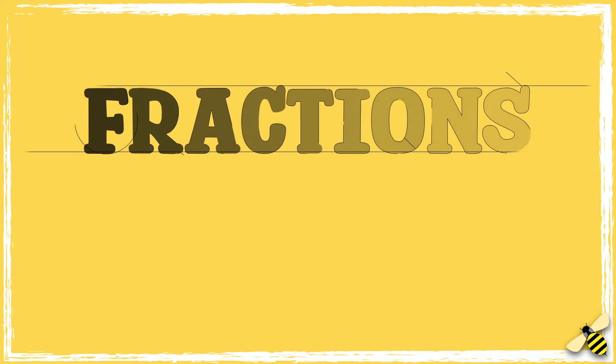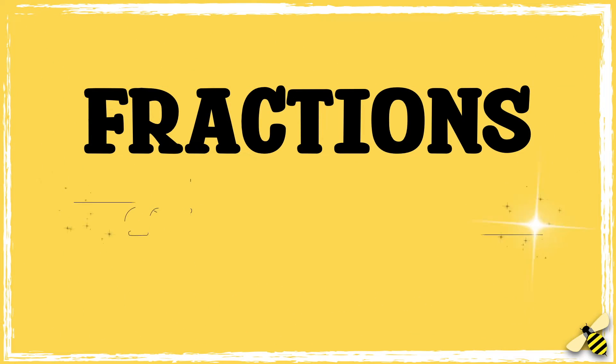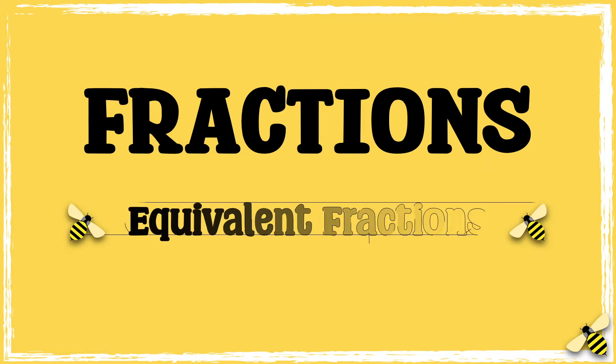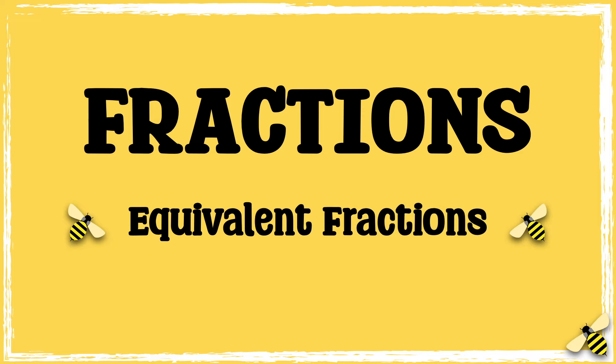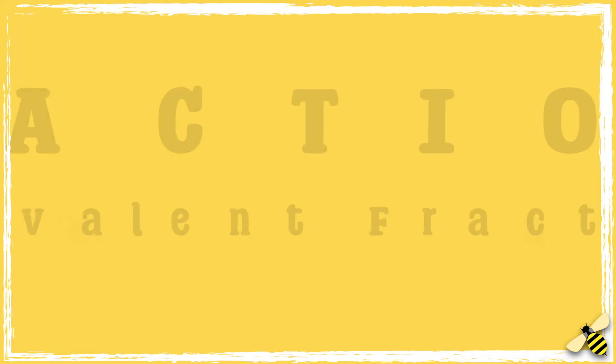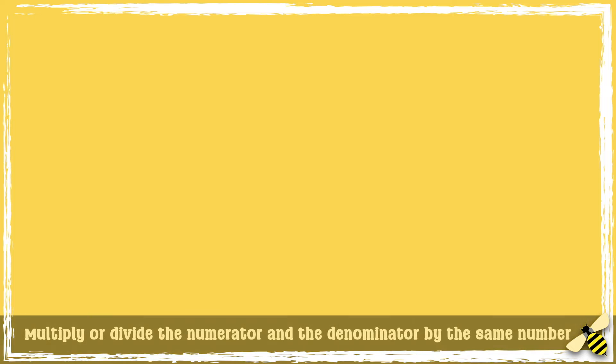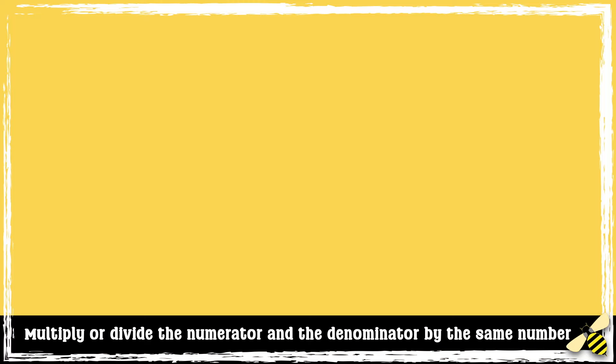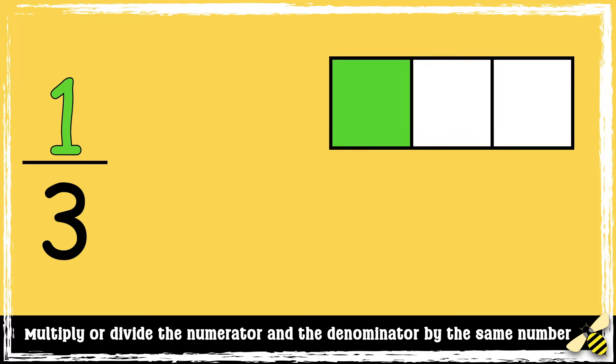In this video we're going to look at how to find equivalent fractions. The method for finding equivalent fractions is to multiply the numerator and the denominator by the same number.